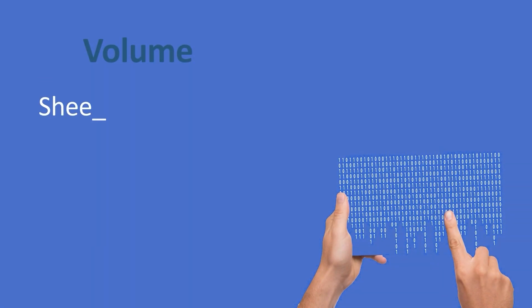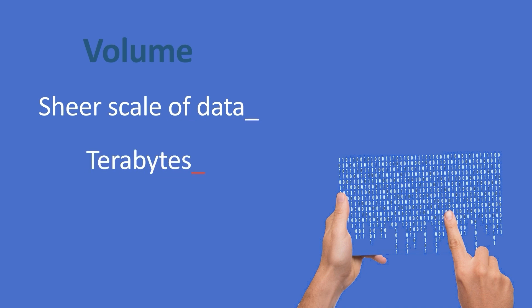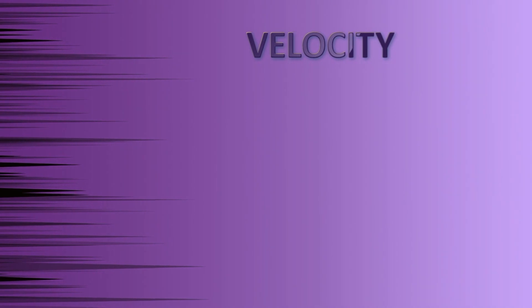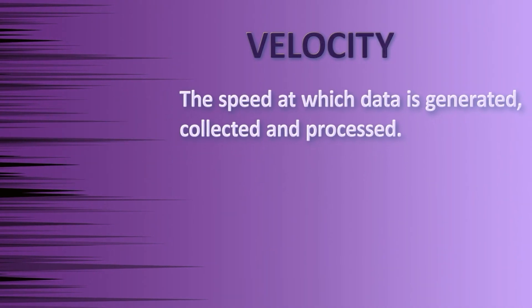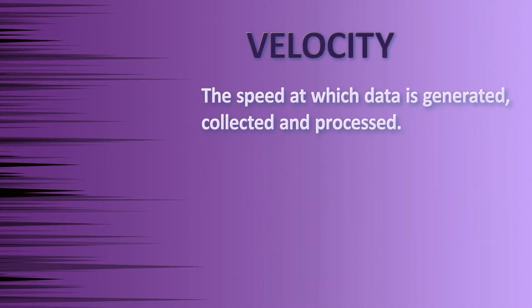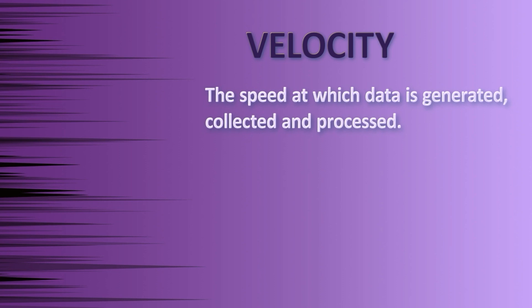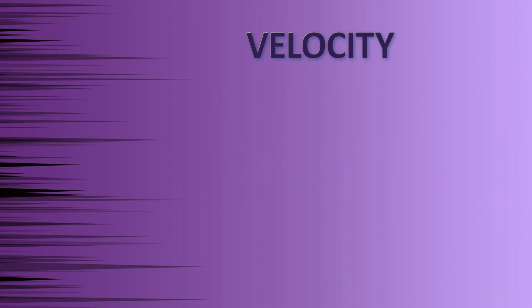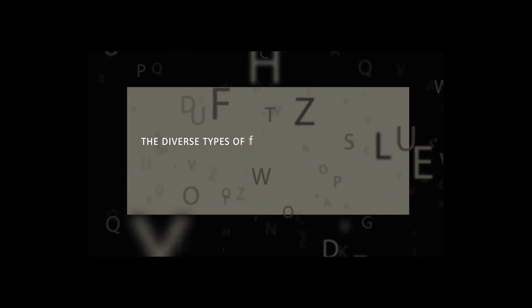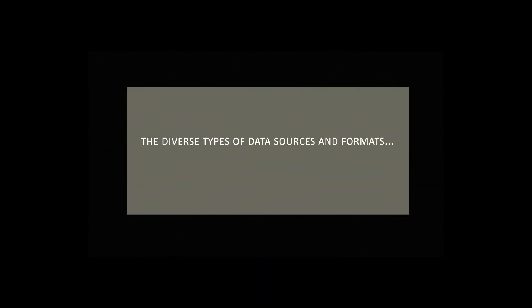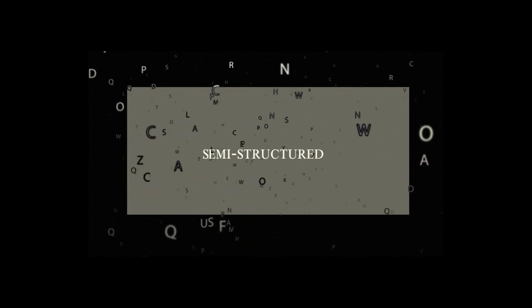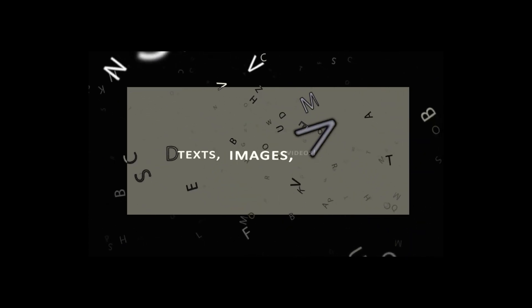Volume refers to the sheer scale of data, which can range from terabytes to exabytes and beyond. Velocity refers to the speed at which data is generated, collected, and processed, which can be real-time or near real-time. Variety refers to the diverse types of data sources and formats, including structured, semi-structured, and unstructured data such as text, images, and video.